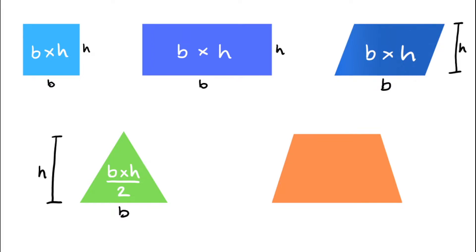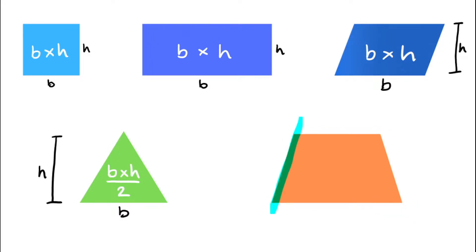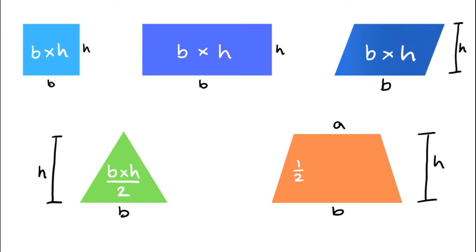The final area formula we're going to look at is the area of a trapezium. To find the area of a trapezium, we label its two parallel sides A and B — the top side A and the bottom side B. We also need the vertical or perpendicular height, labelled h. The formula for the area of a trapezium is a half of the sum of A plus B, multiplied by the height. That was a quick recap on our important area formulas.